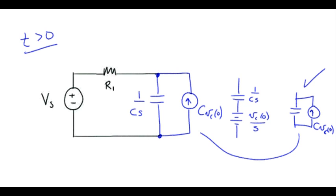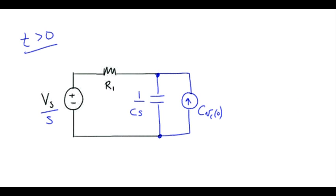And the constant source in the S domain looks like that constant divided by S. And again, the voltage we're looking for is this capacitor voltage, so I'll call that Vc of S. I think nodal analysis is the most likely way to go. Let me assign my reference down here.